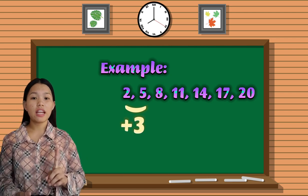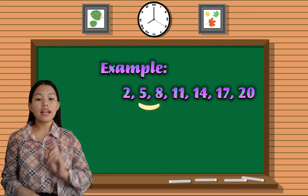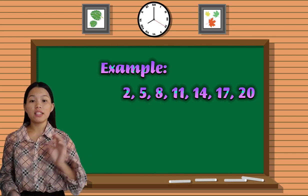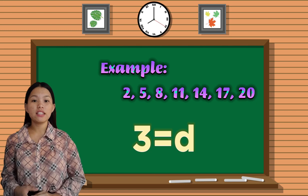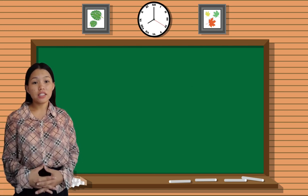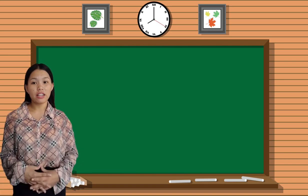To go from the first term to the second term, we need to add 3. To go from the second to the third term, we need to add 3, because 3 is our common difference. So in an arithmetic sequence, the pattern is based on addition and subtraction.